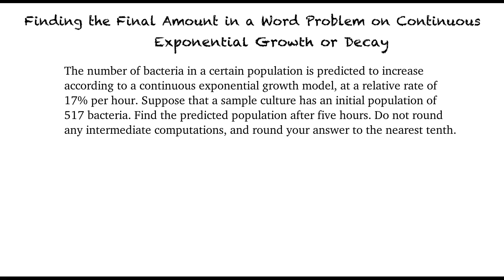Suppose that a sample culture has an initial population of 517 bacteria. Find the predicted population after 5 hours. Do not round any intermediate computations and round your answer to the nearest tenth. For this problem, the rate should be positive 0.17 since the bacteria exhibited exponential growth, right? Exactly.